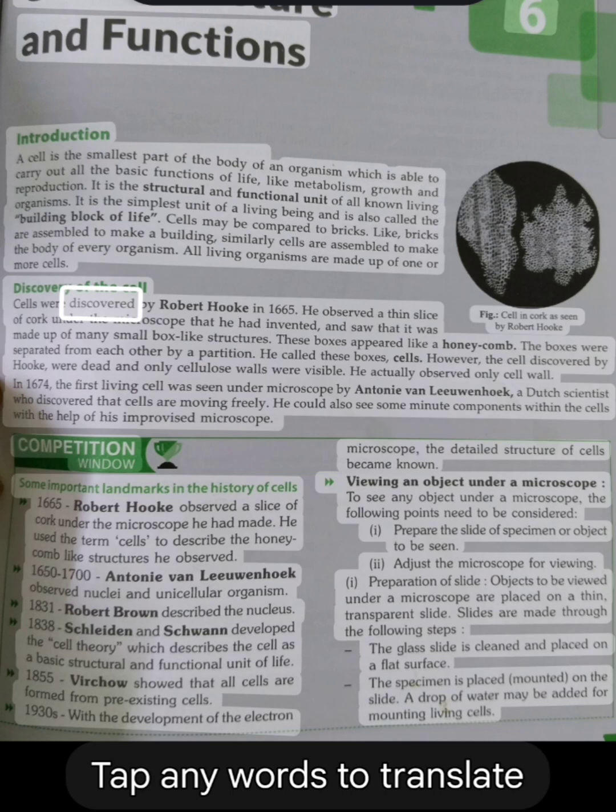Discovery of the Cell. Cells were discovered by Robert Hooke in 1665. He observed a thin slice of cork under the microscope that he had invented and saw that it was made up of many small box-like structures. These boxes appeared like a honeycomb. The boxes were separated from each other by a partition. He called these boxes cells. However, the cells discovered by Hooke were dead and only cellulose walls were visible. He actually observed only cell walls.